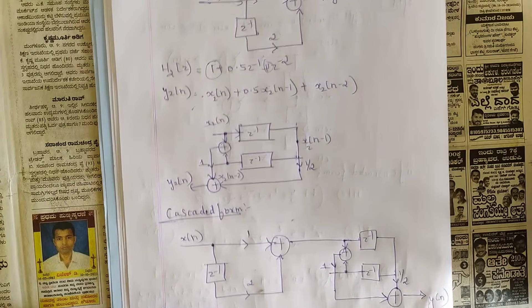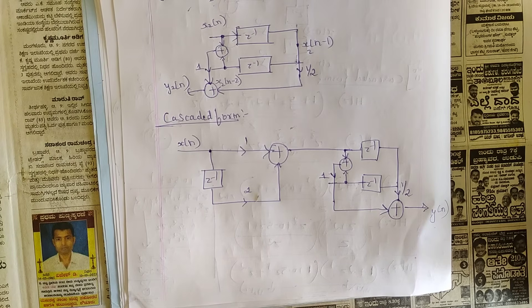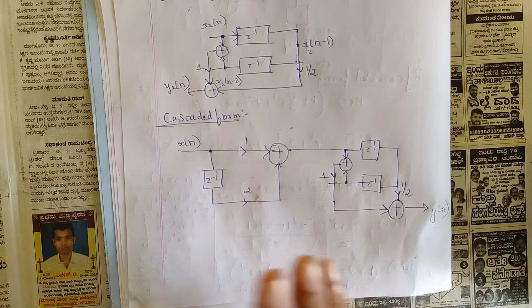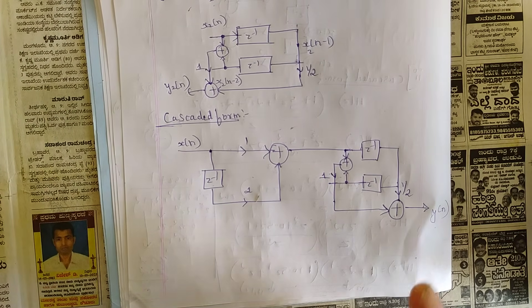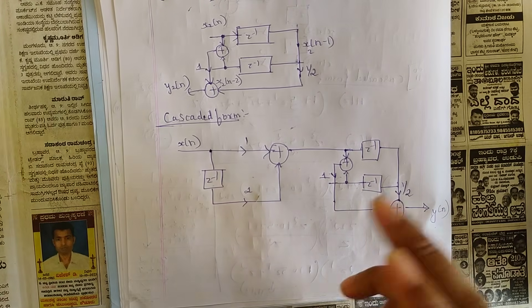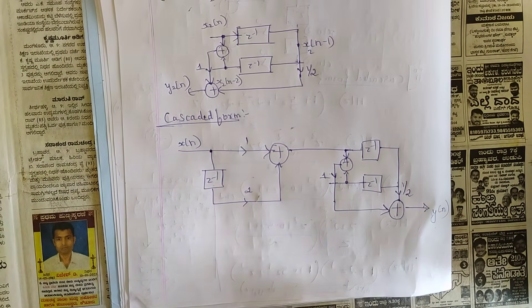This cascaded form structure completes the problem, which took around 15 minutes to solve. In the next session we will look at IIR structures from the fifth module. IIR stands for Infinite Impulse Response, as opposed to FIR (Finite Impulse Response). There is one single change in IIR structures compared to FIR — that will be explained in the next session. Thank you, please like, share, and subscribe.